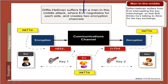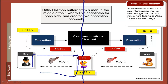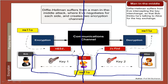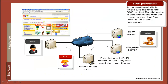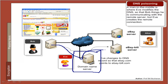Unfortunately, Diffie-Hellman suffers from the man-in-the-middle attack — Eve can negotiate one key with Bob and another with Alice, and as far as Bob and Alice can tell they are negotiating with each other. Another example is DNS poisoning, where Eve poisons the DNS server so that instead of communicating with the intended server (e.g., eBay), the communication happens with another server controlled by Eve.